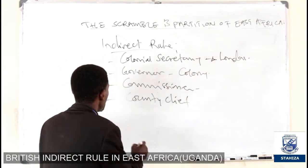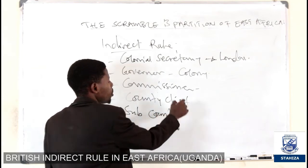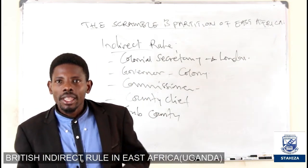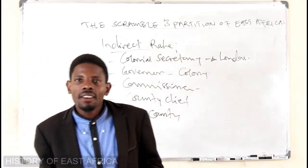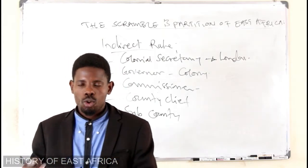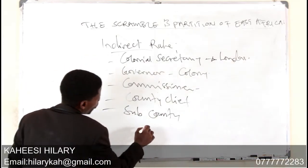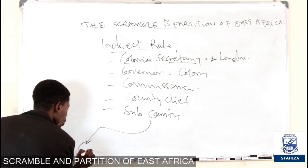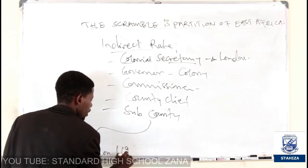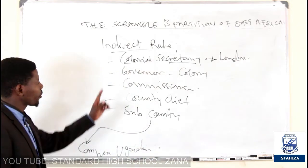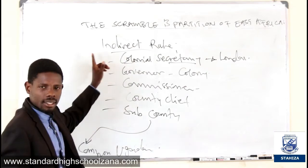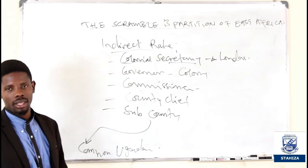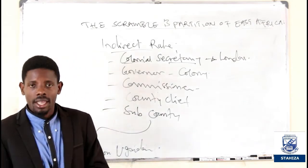Below the Saza chief was the sub-county chief, the Gombolola chief. Then there was also the parish chief, and then the village headman. That chain of leaders passed orders all the way from the Colonial Secretary down to the common Ugandan. For example, if people were to pay a certain tax — the hut tax or the gun tax — that order came from the Colonial Secretary through this chain down to the person supposed to pay. That was the indirect rule.